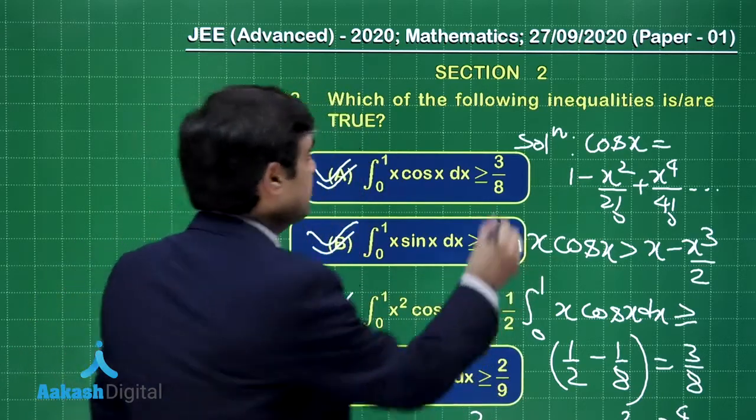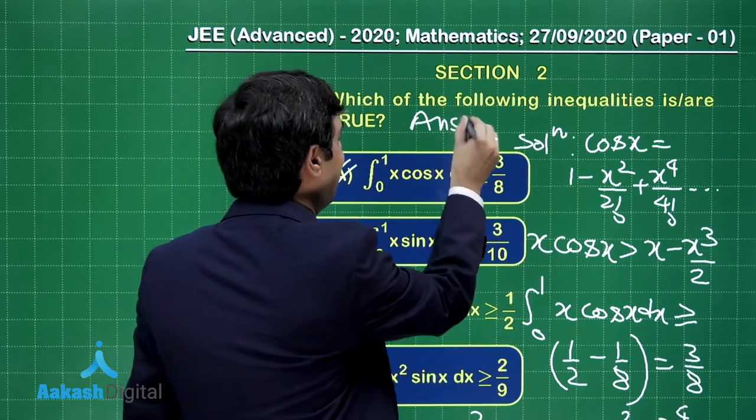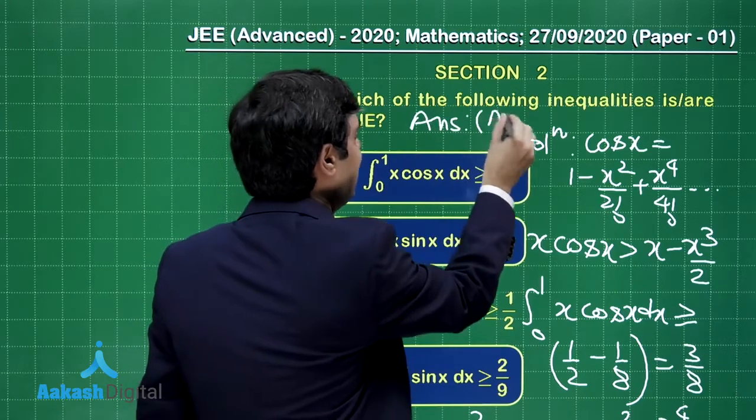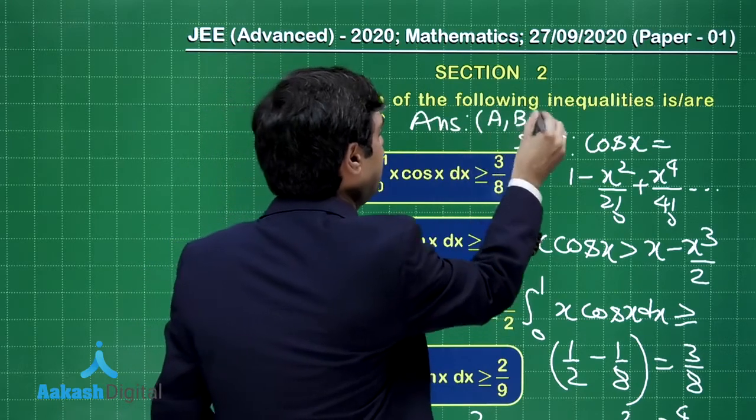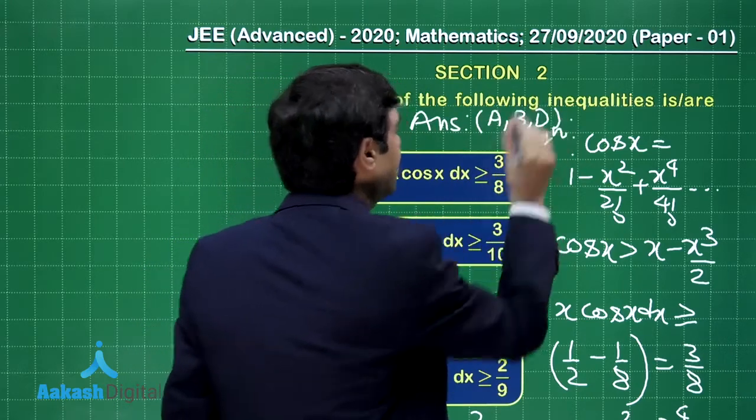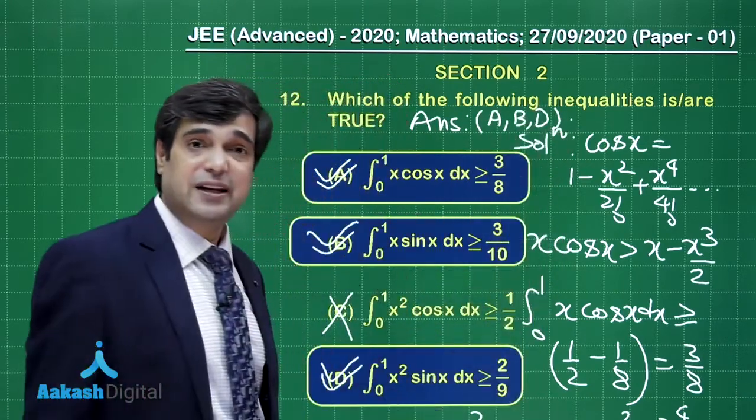The correct answers for question 12 are a, b, and d. I am sure this is clear.